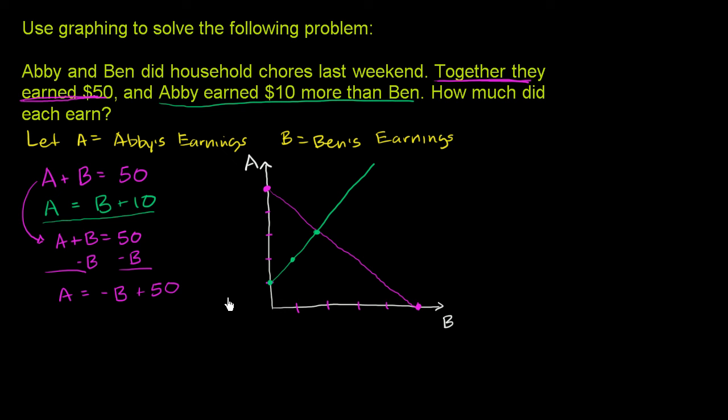So we've graphed the two constraints. Together they earned $50 - that's the magenta constraint. Abby earned $10 more than Ben - that's the green constraint. And it looks like we have a point of intersection.